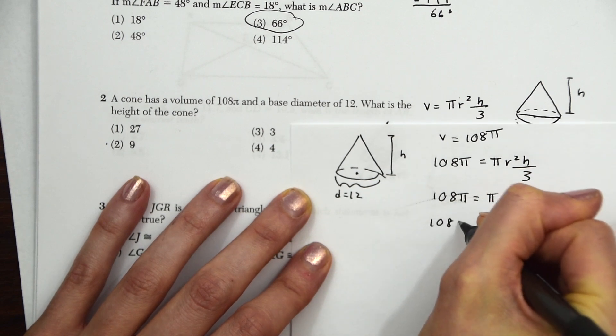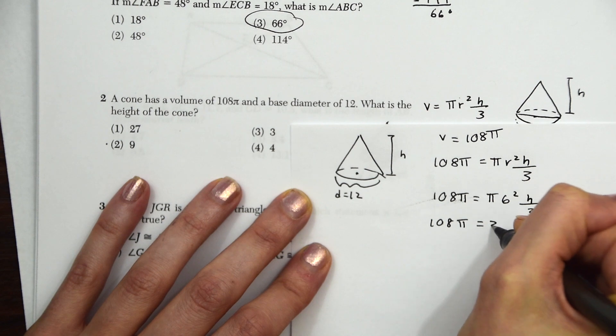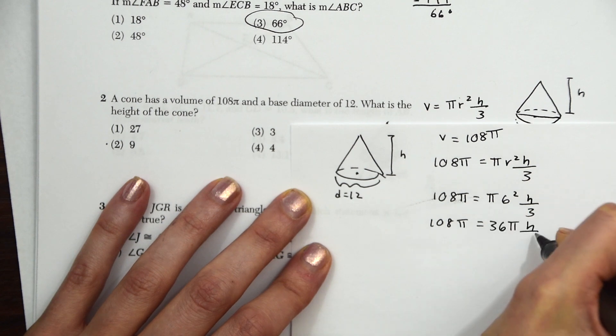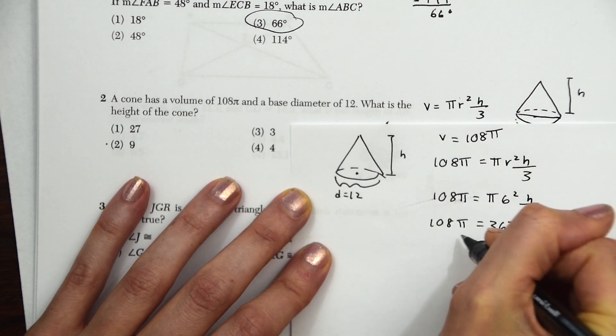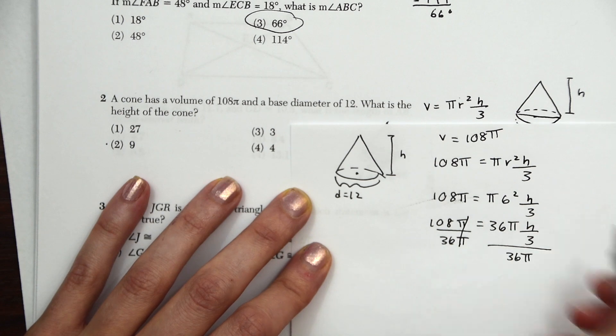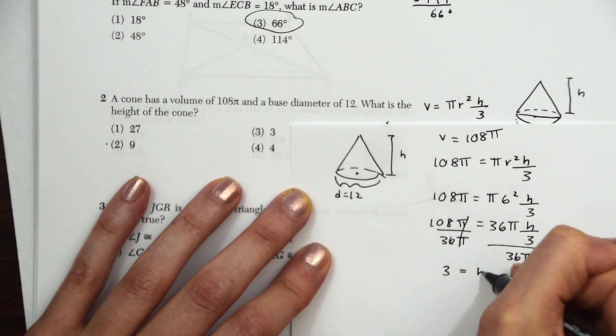So we have 108π equals 36πh over 3. And then we're going to divide this whole thing, both sides, by 36π. The pi's are going to cancel out. And then we're going to be left with 3 equals h over 3.